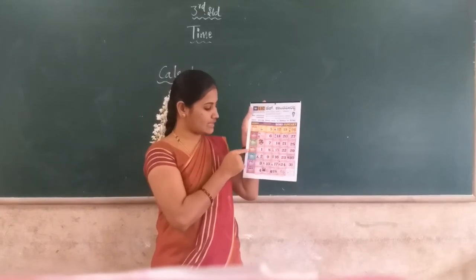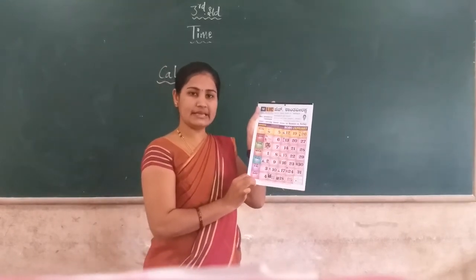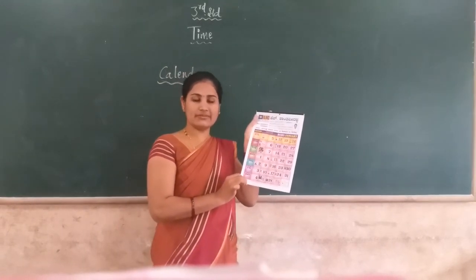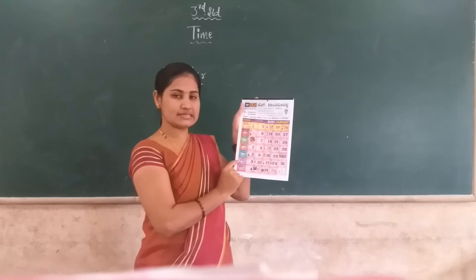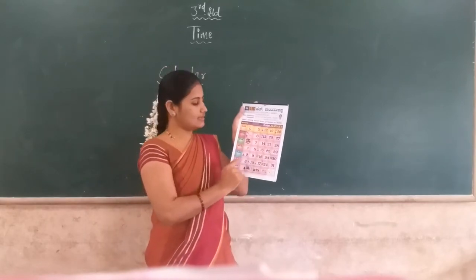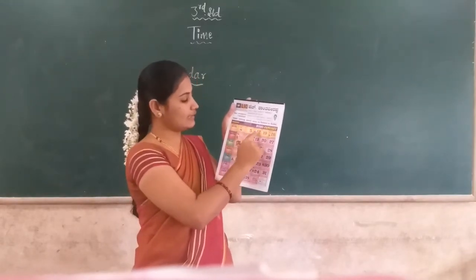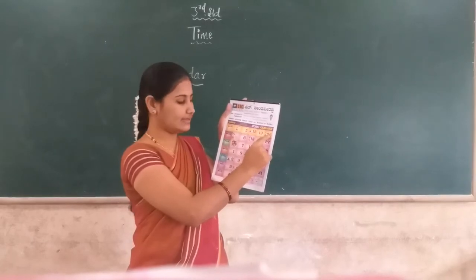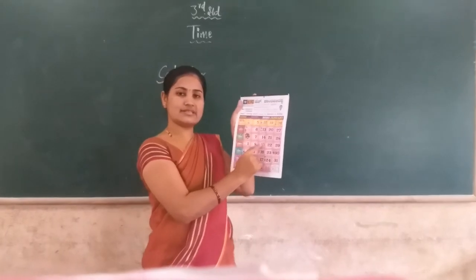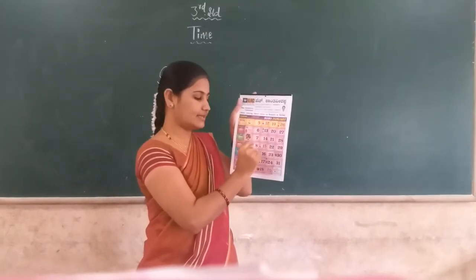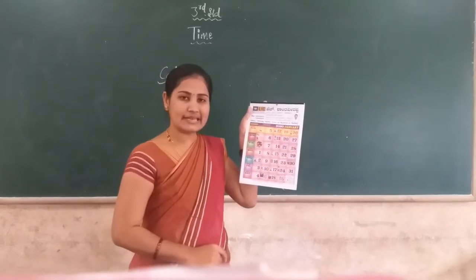Sunday, Monday, Tuesday, Wednesday, Thursday, Friday, and Saturday — there are seven days in a week, as you already know from previous classes. Some numbers are in red color. All Sundays are in red, and also the Sankranti festival is marked in red. Some different colors are used to indicate dates in this calendar.